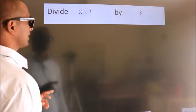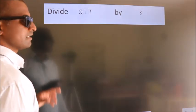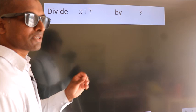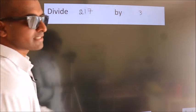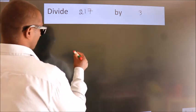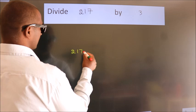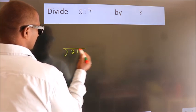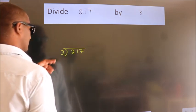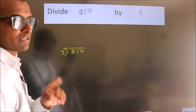Divide 217 by 3. To do this division, we should frame it in this way. 217 here, 3 here. This is your step 1.